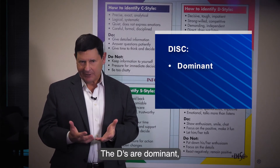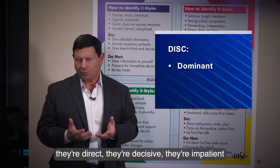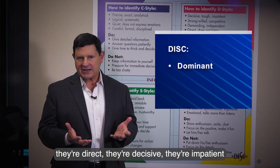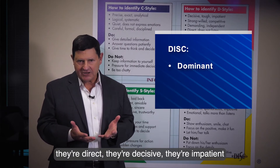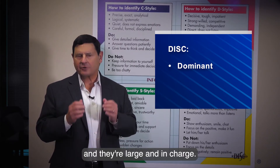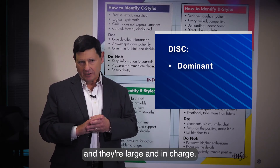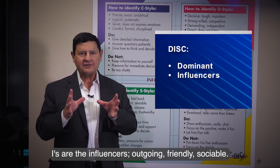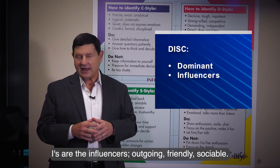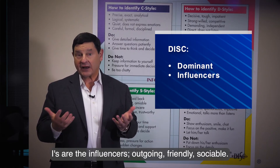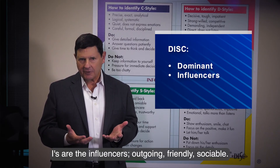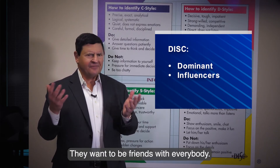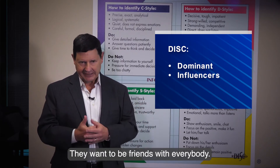The D's are Dominant — they're direct, decisive, impatient, and large and in charge. I's are the Influencers: outgoing, friendly, sociable. They want to be friends with everybody.